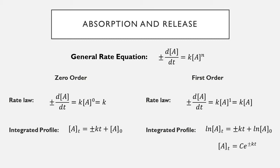For first order, n equals one, so the change in concentration with respect to time equals k times the concentration. With a high starting concentration the change is large, but towards the end of the release profile where little concentration remains, the rate trickles down to a very slow release. Integrating this requires a logarithmic term, yielding an Arrhenius-type equation: concentration equals the natural log of starting concentration times the exponential of plus or minus k times time — an exponential profile, whereas zero order is linear.